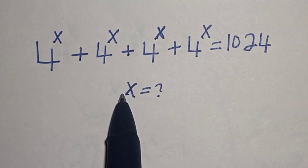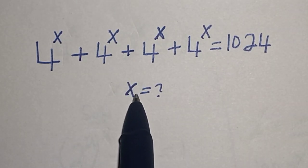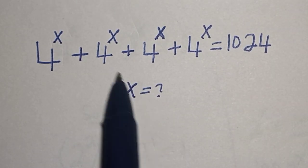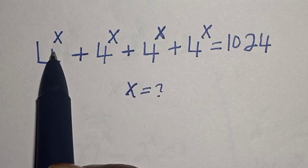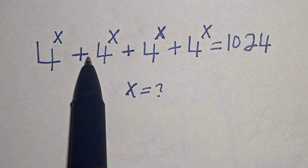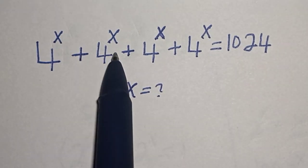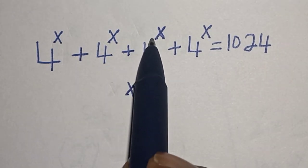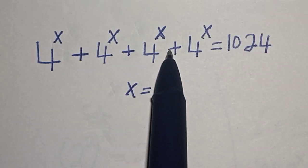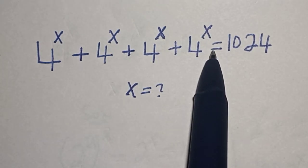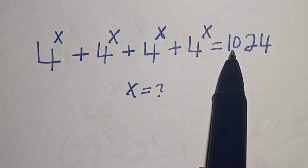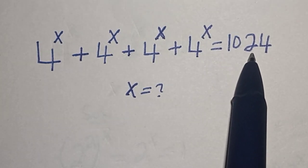Hello, welcome to Magist. In this class, we want to find the value of s from this equation: 4 to the power of s, plus 4 to the power of s, plus 4 to the power of s, plus 4 to the power of s, is equal to 1024.